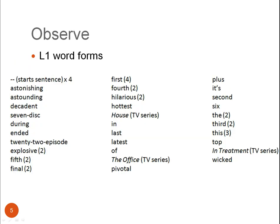Step one is observe. Here I've written down every single word form that occurs at this position, L1, in my corpus. This is part of the observation — I can easily see what word forms occur with 'season'. The numbers in brackets stand for repeated occurrences. For example, the word 'first' occurs four times immediately to the left of 'season'.